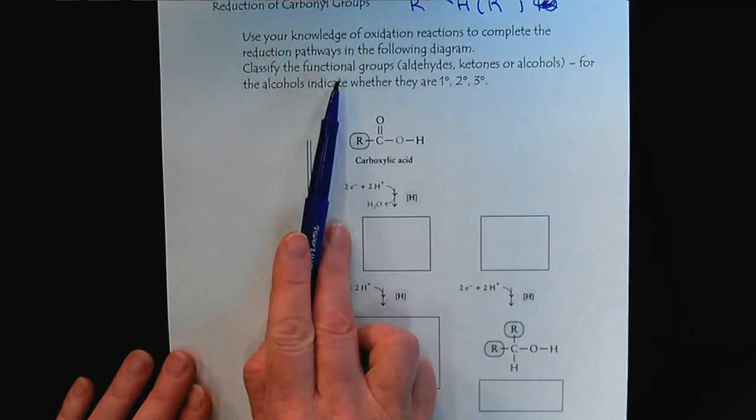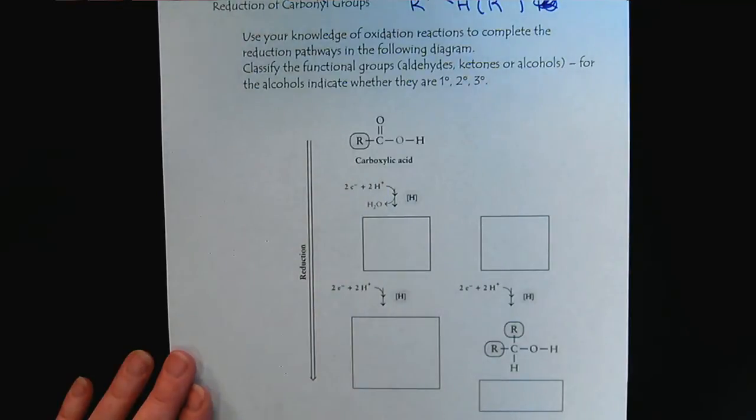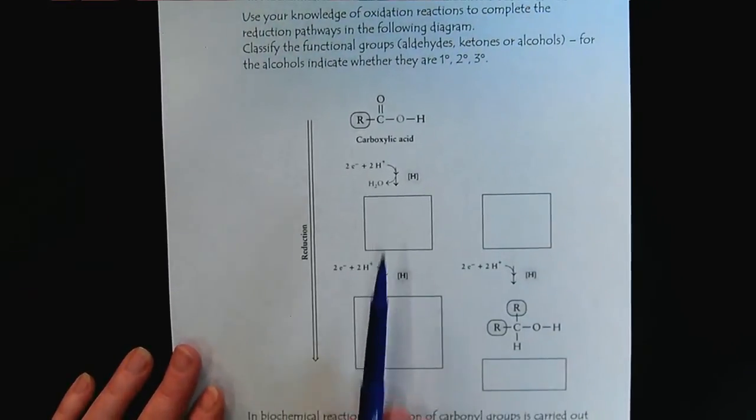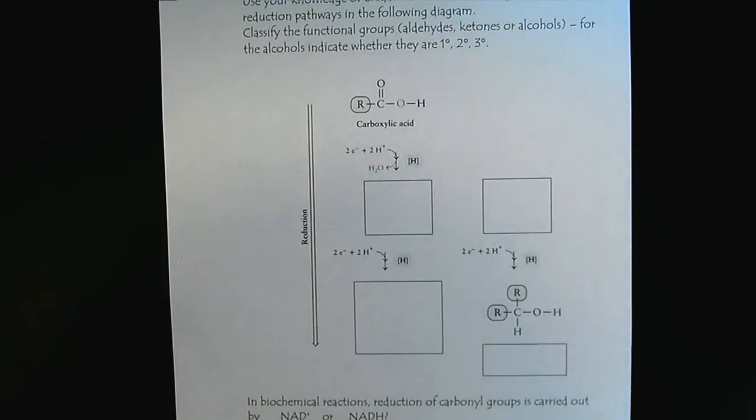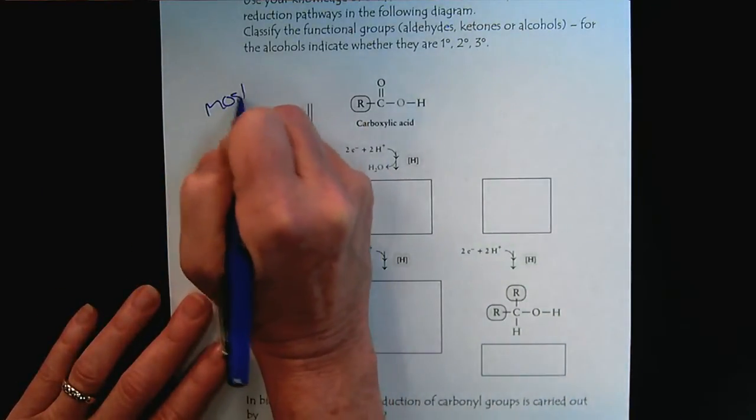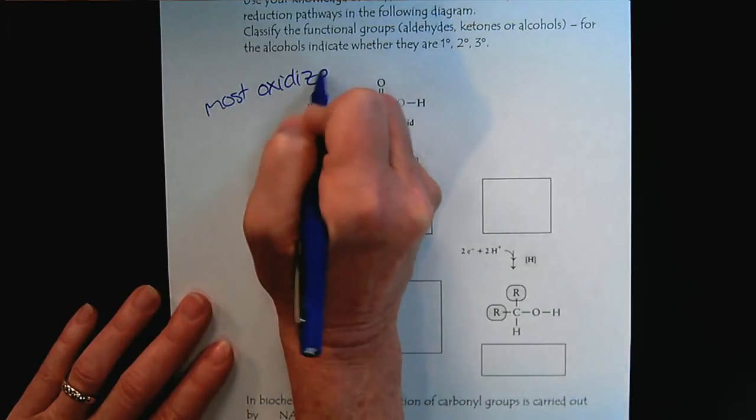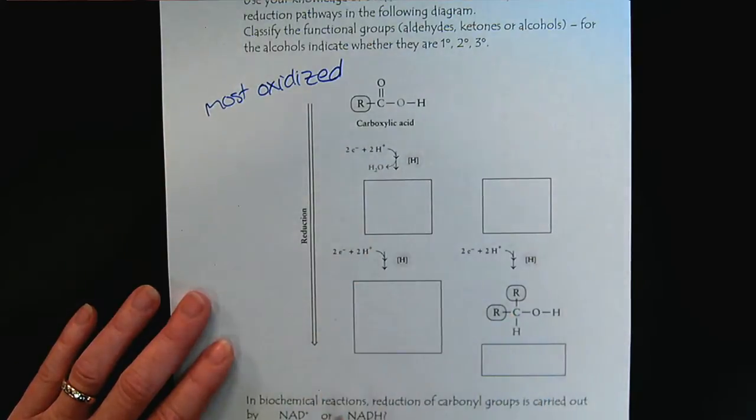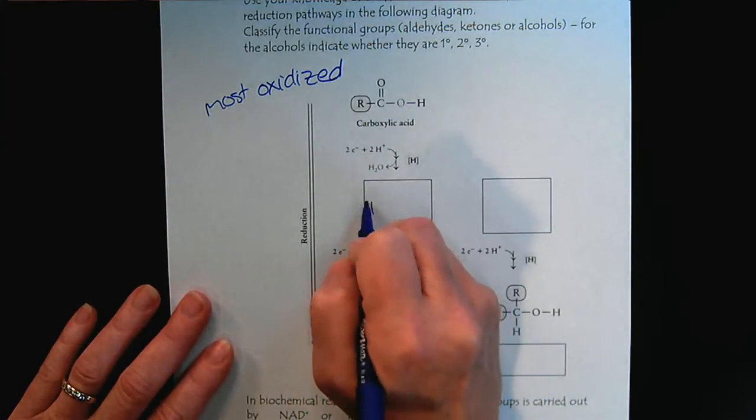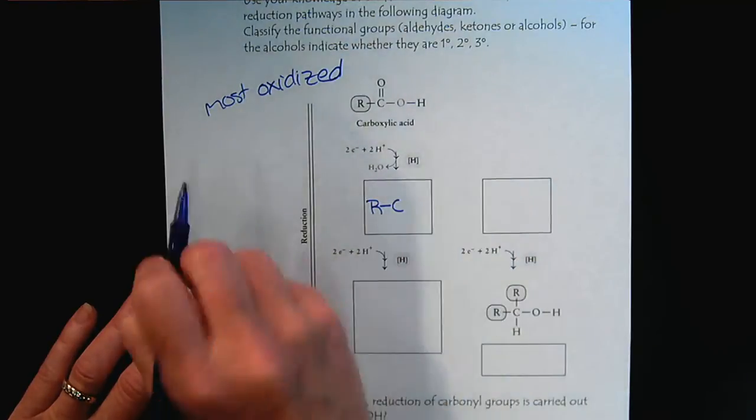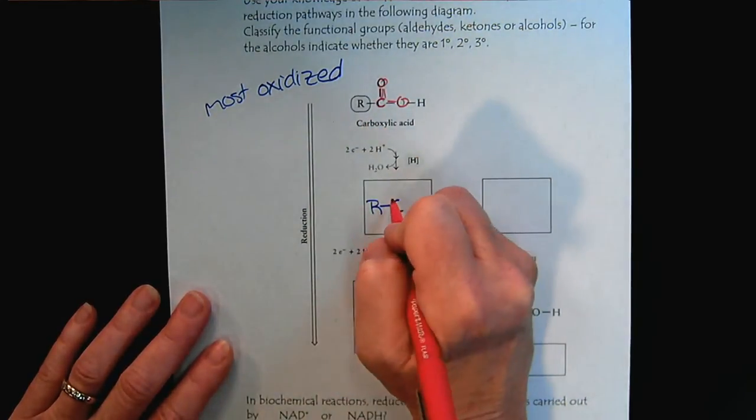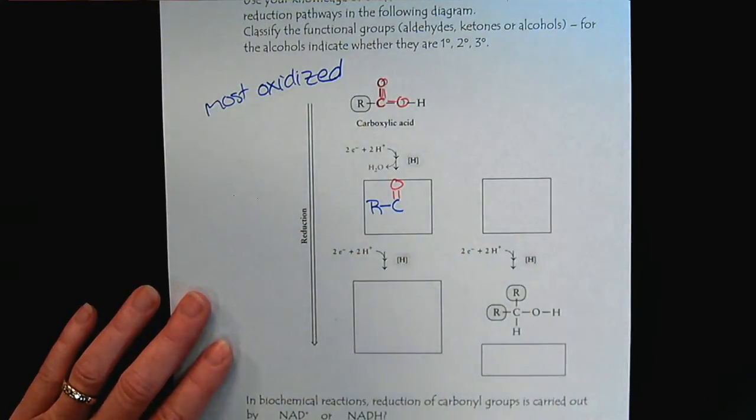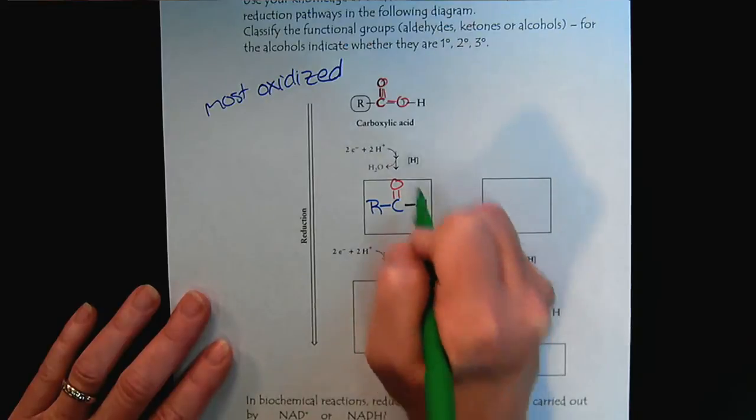Look at this diagram based off the previous page. Classify the functional groups. The carboxylic acid's been done for you. So think about the relationship between the functional groups in terms of oxidation and reduction. The carboxylic acid is the most oxidized. Our symbol here shows we're doing a reduction. The R group doesn't change. So for the first step, we have three carbon to oxygen bonds. We'll reduce that to only two.